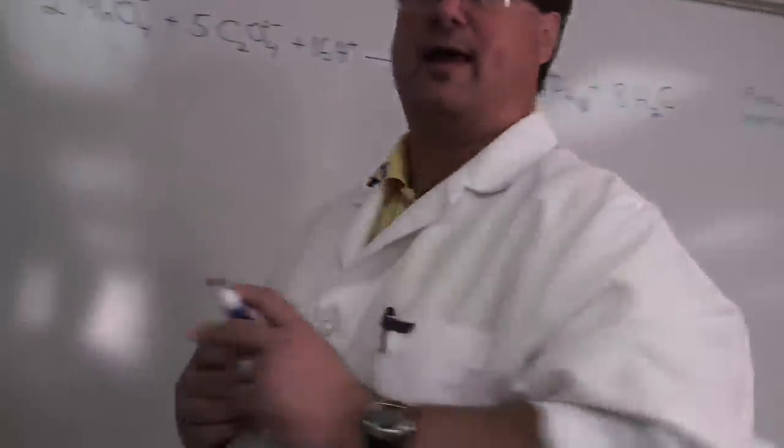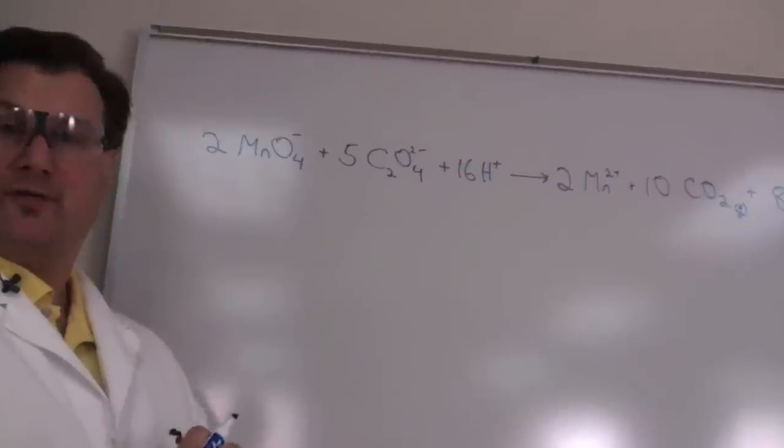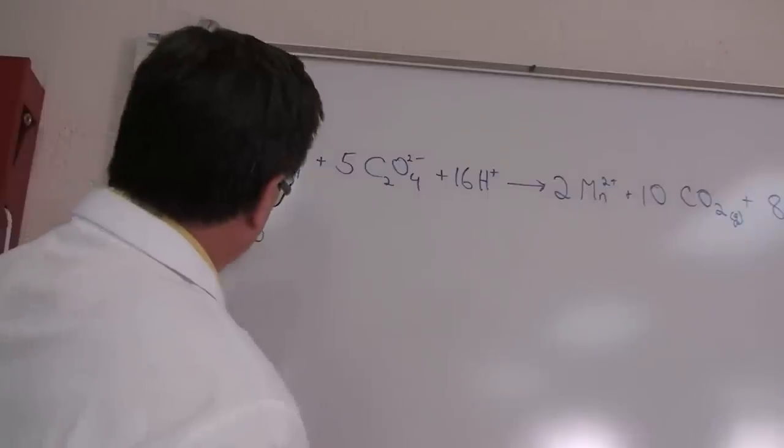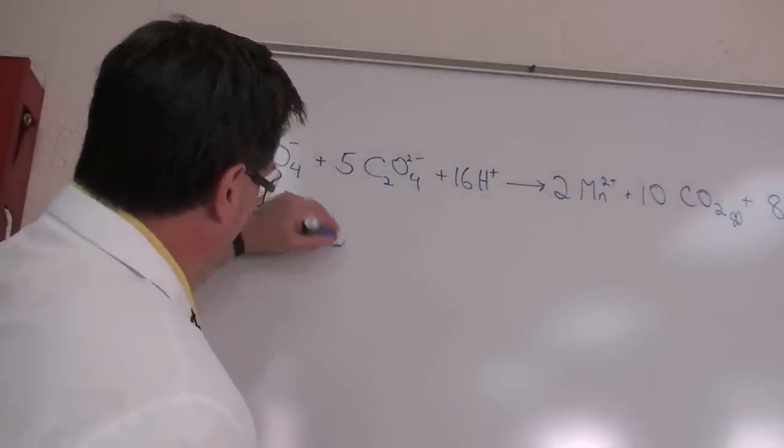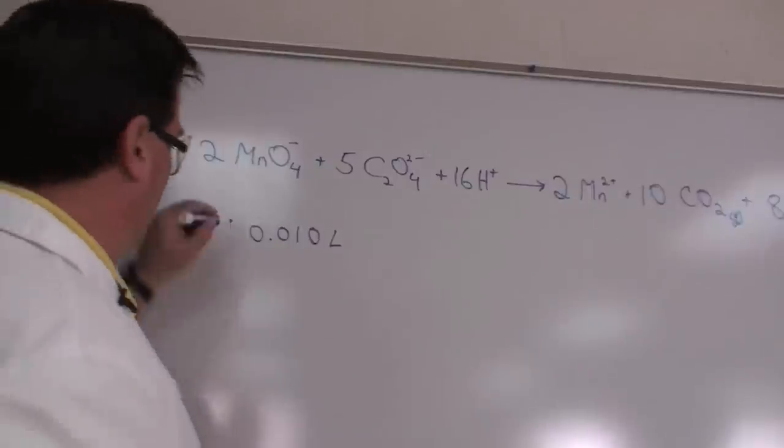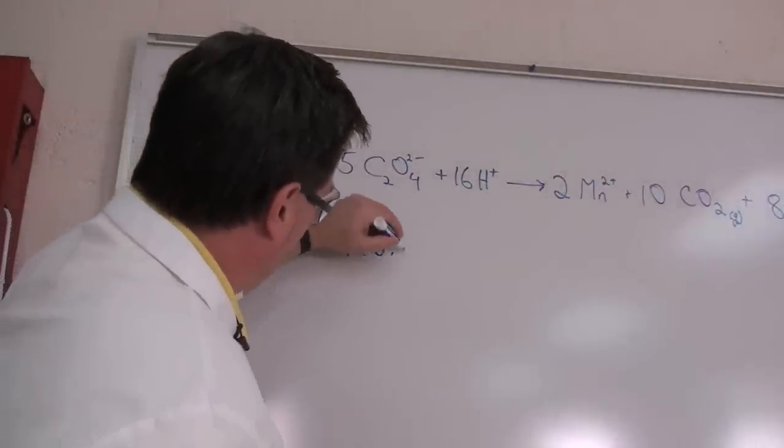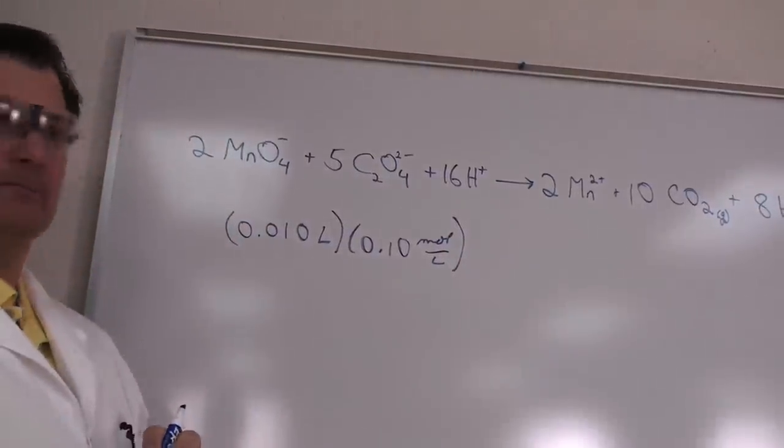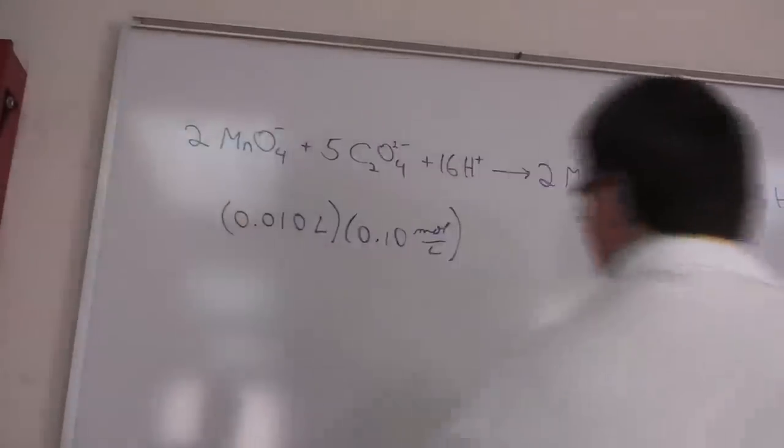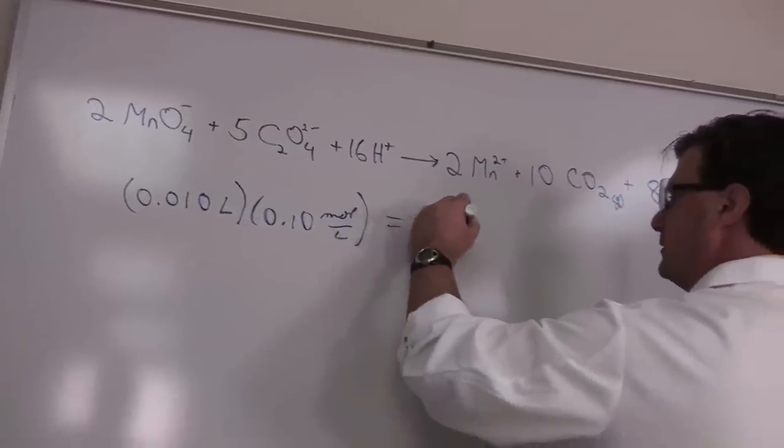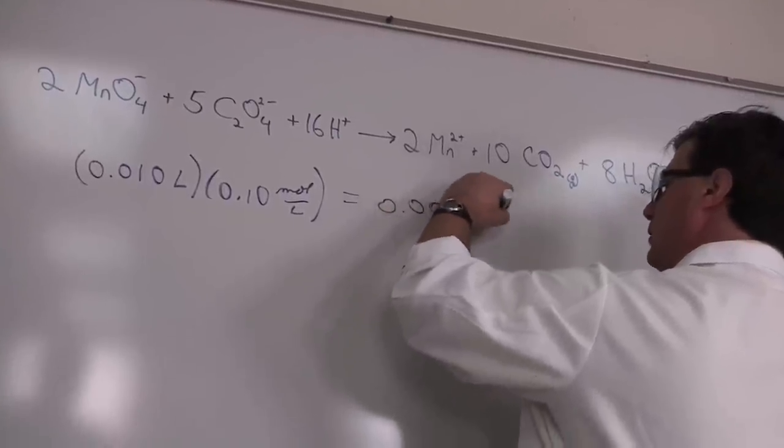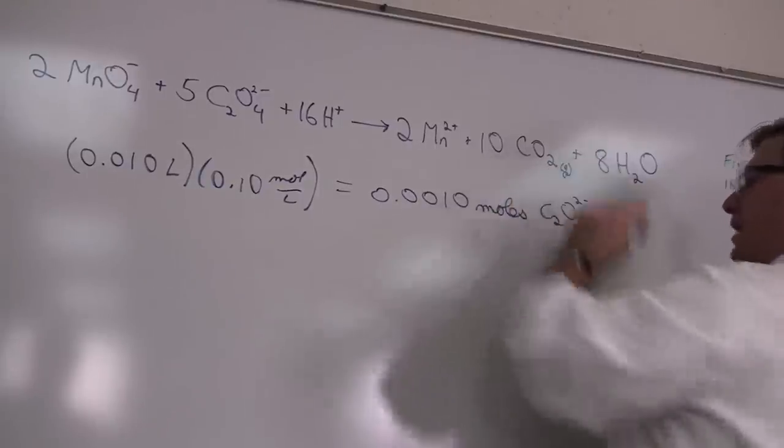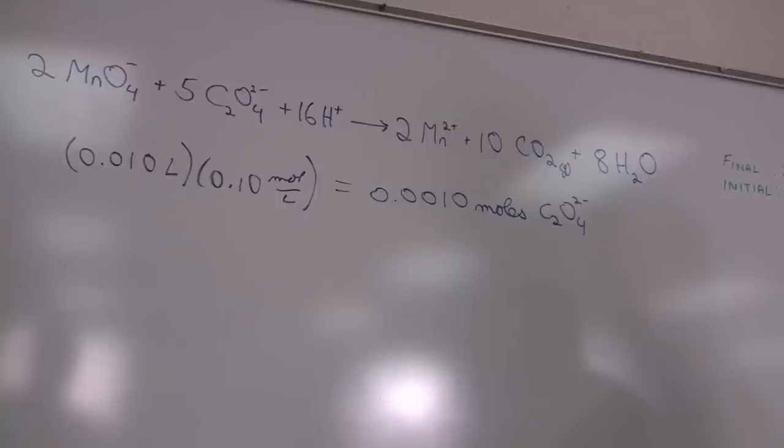Remember that we started with 10 milliliters, which I'm going to convert to liters. So 10 milliliters is 0.01 liters. We started with 0.01 liters of a 0.10 molar solution of oxalate. So that calculation means that we have 0.0010 moles of the oxalate ion. That's the number of moles of oxalate that were in the flask.